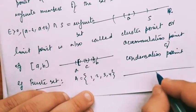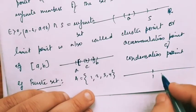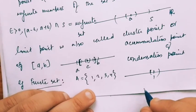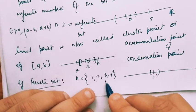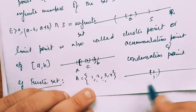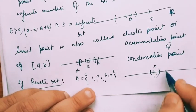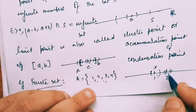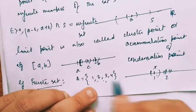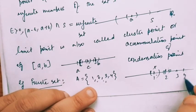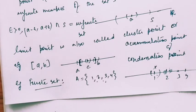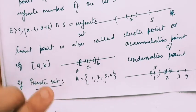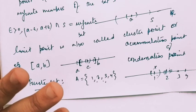Let us take A = {1, 2, 3, 4}. It is a finite set containing only 4 elements. We will check whether 1 is a limit point or not. Every neighborhood of 1 must contain infinite members of the set, but since the set does not have infinite members, 1 cannot be a limit point. In the same way, 2, 3, and 4 are also not limit points because no neighborhood contains infinite members of the set A. They are not limit points.